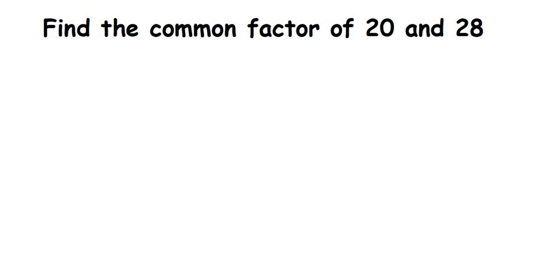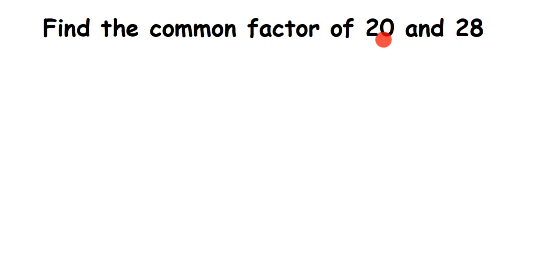Here's a question on common factors — how to find common factors of 20 and 28. Factors means, in simple definition, the numbers whose tables include the given number. For example, 20 goes in the 1, 2, 5, and 10 table, so 1, 2, 5, and 10 all become factors of 20. For common factors, we first find the factors of each number separately, then take what is common between them.